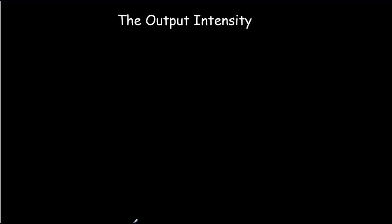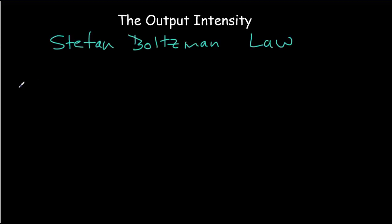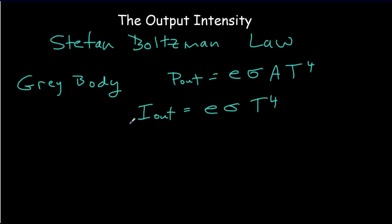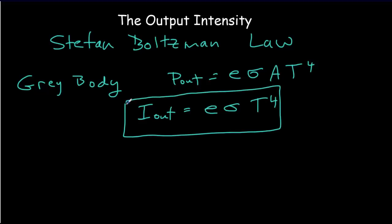Now let's think about the output intensity. For the output intensity, we use the Stefan-Boltzmann law. The Earth isn't quite a black body, but it is a gray body. That means the power output is given by the emissivity times the Stefan-Boltzmann constant times the surface area times the temperature in Kelvin to the fourth power. And the intensity output is just the output power divided by the surface area, so that equals the emissivity times the Stefan-Boltzmann constant times the temperature in Kelvin to the fourth power. So now we have expressions for the input and output intensity, and we can equate them and solve.